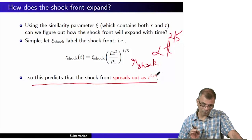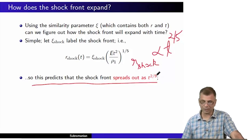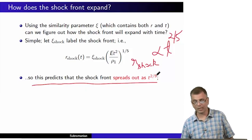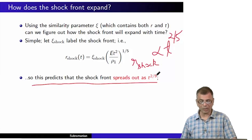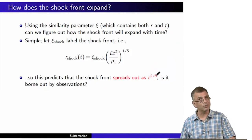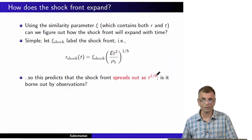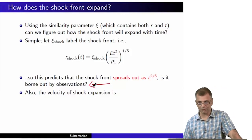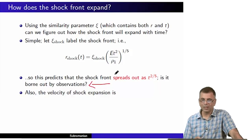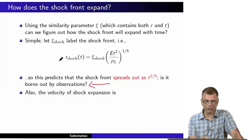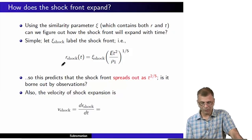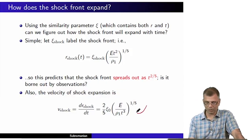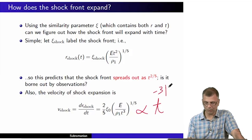We did make use of some very important physical assumptions, detailed earlier. It also means that if any one of these assumptions are violated, this nice result cannot be obtained. Is it borne out by observations? You can make all kinds of fancy predictions, but it has to be borne out by observations. There are regimes where observations support this very well. The velocity of shock expansion — you just differentiate R with respect to T — gives V_shock = dR_shock/dt ∝ t^(−3/5). As time progresses, the velocity decreases in this manner.